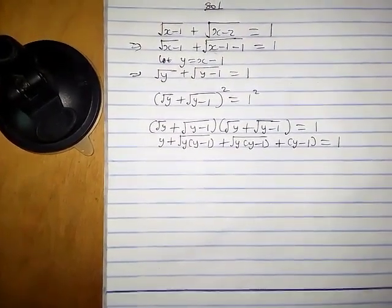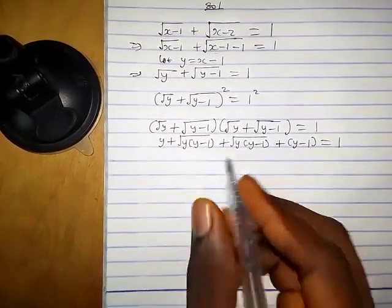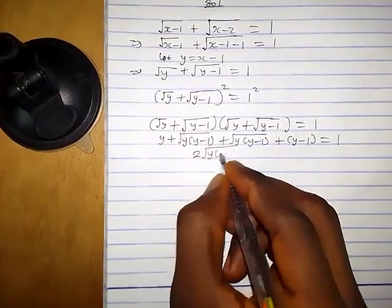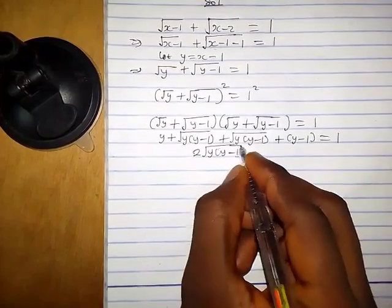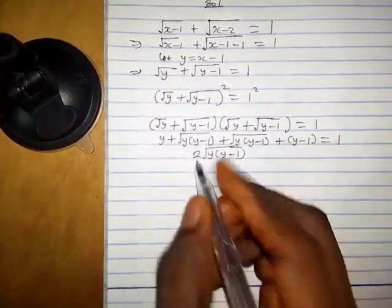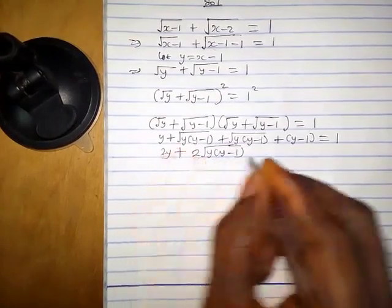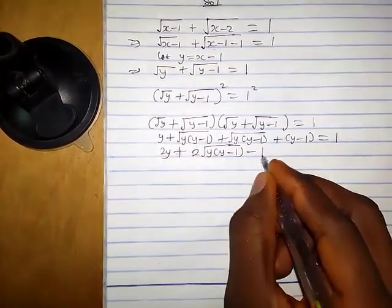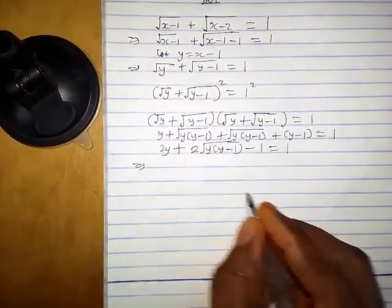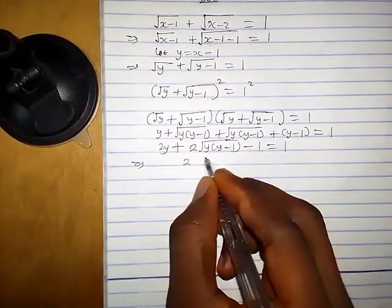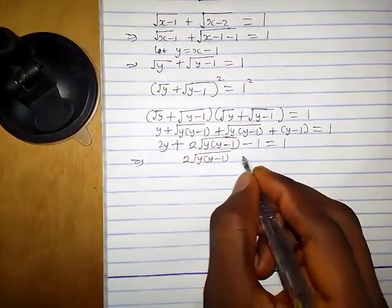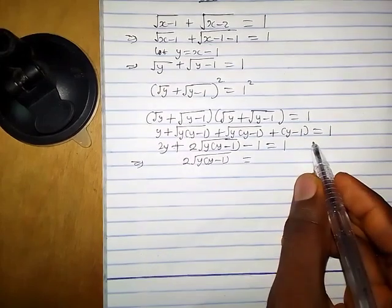The two cross terms are the same, so we have 2 times square root of y(y minus one). Also, y plus y gives 2y. So combining everything: 2y minus 1 plus 2 square root of y(y minus one) equals one. This implies 2 square root of y(y minus one) equals one minus 2y.